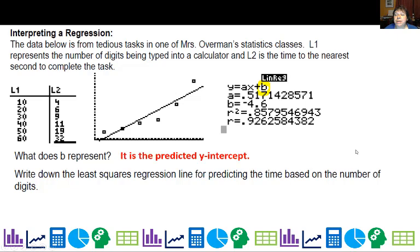What does B represent? B is a predicted y-intercept. We did do one example where you had the Barbies and zero rubber bands, and you notice that B on the regression didn't match the height of the Barbies. Well, that's because that's a predicted value. So it's not necessarily the actual value. So if we're going to write down the least squares regression line, we're going to say that the amount of time in seconds is equal to the slope times the number of digits plus the y-intercept, which in our case is actually negative. You can see that little negative sign right there. So that is the least squares regression line for predicting the time based on the number of digits.